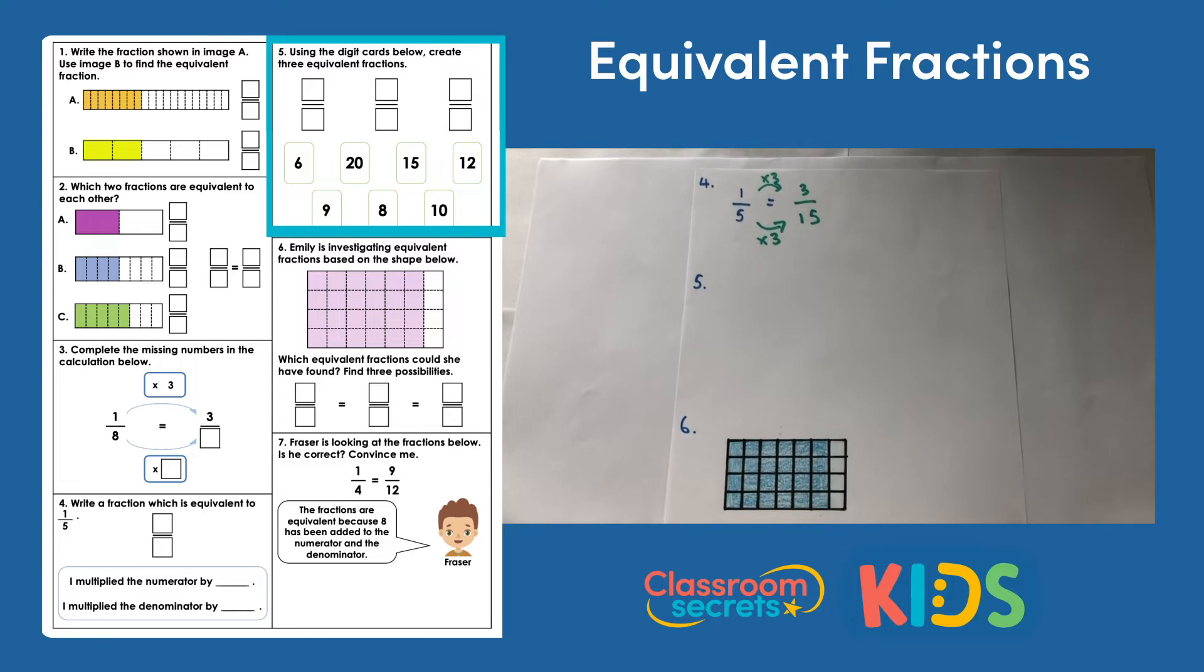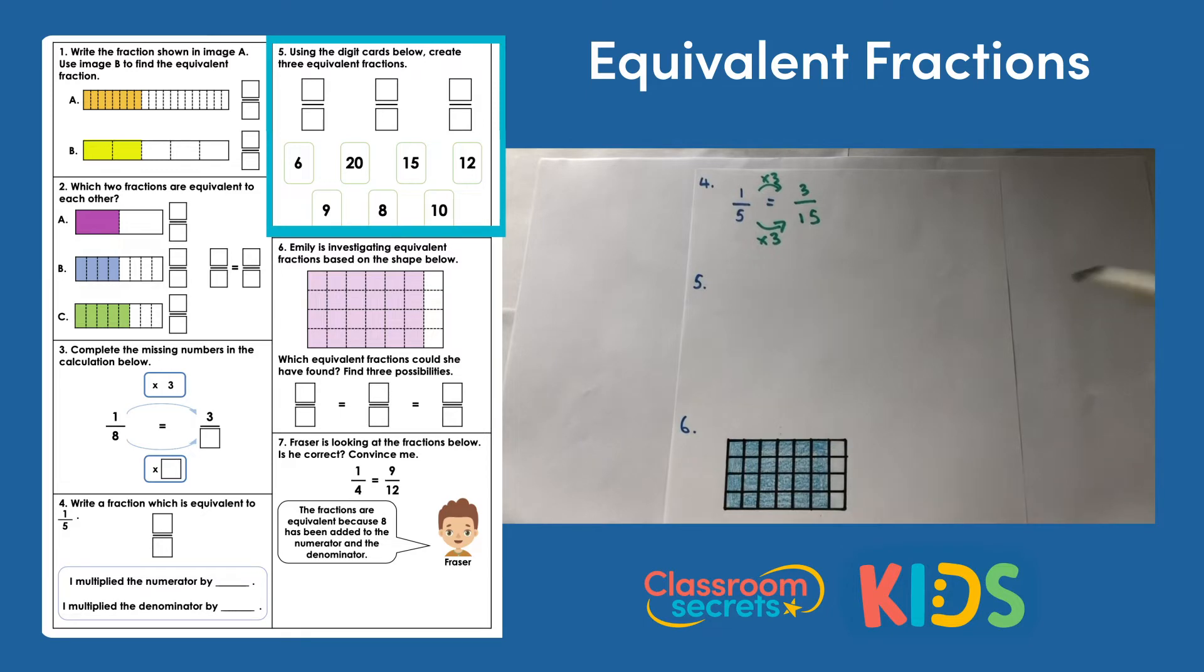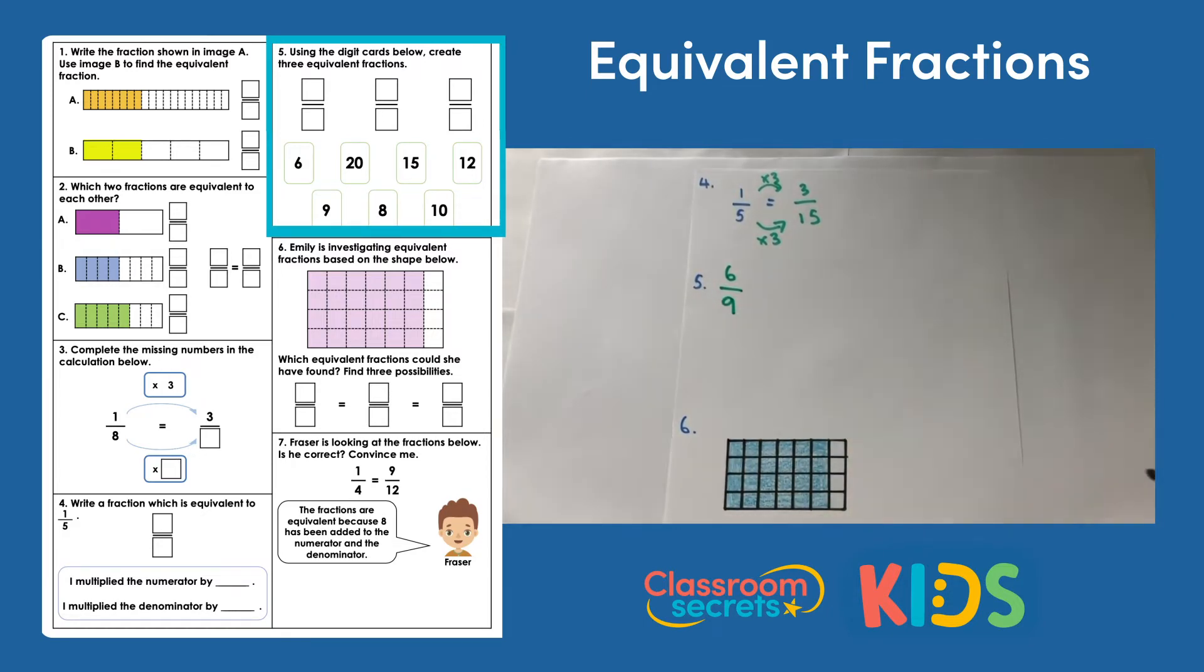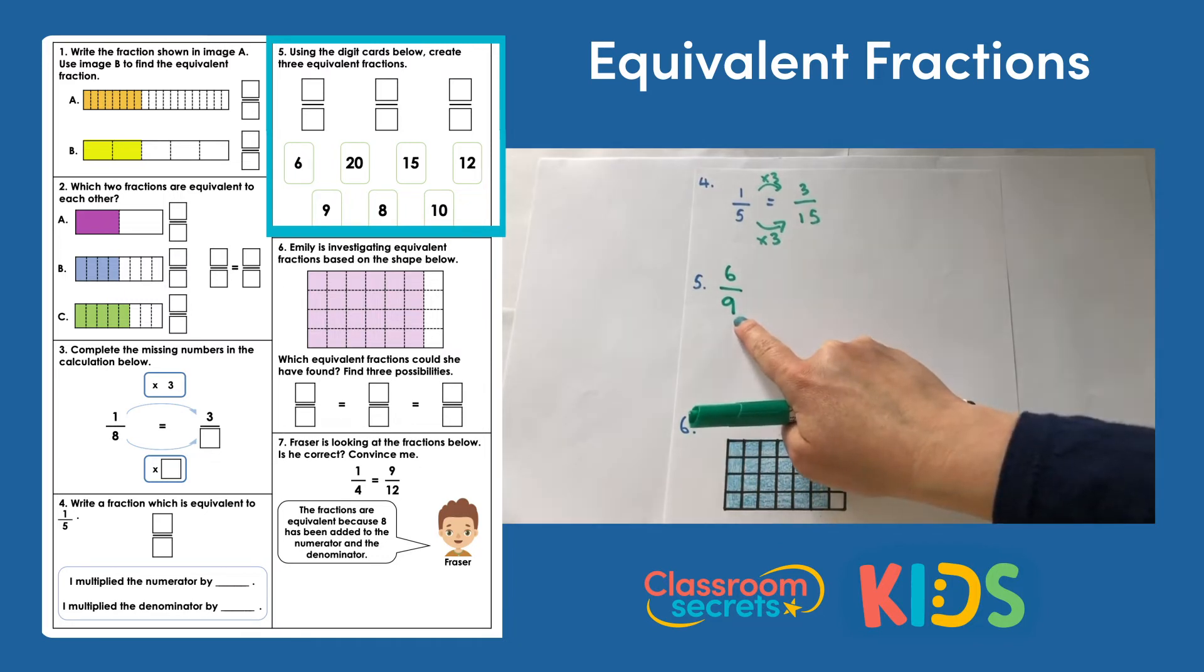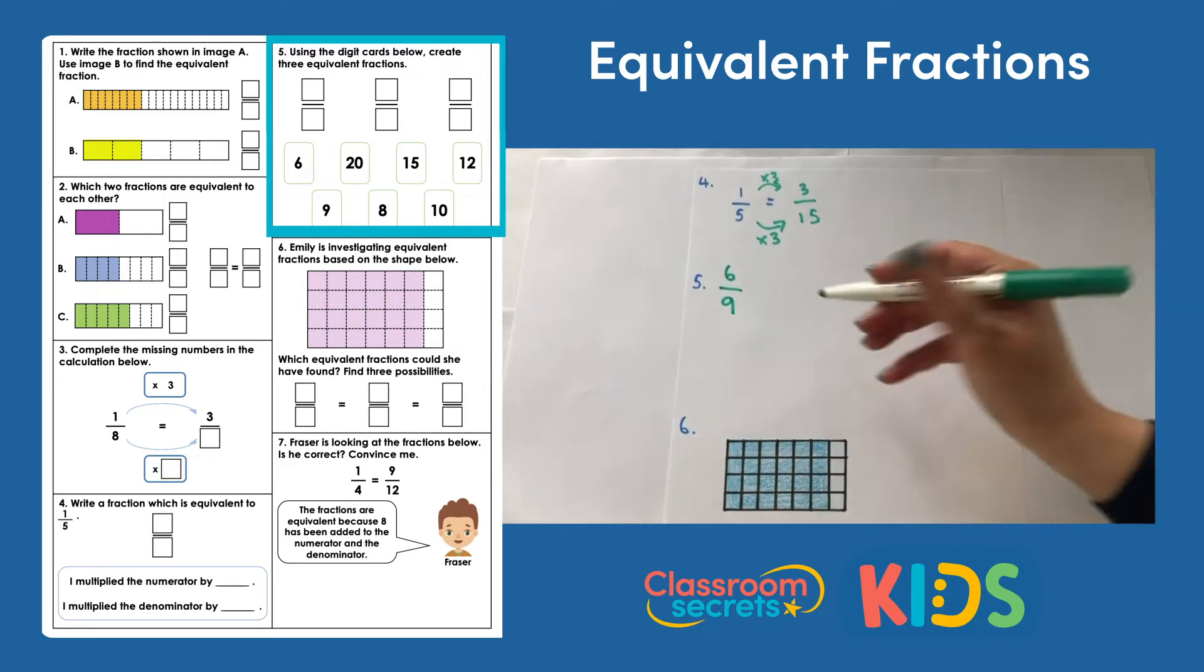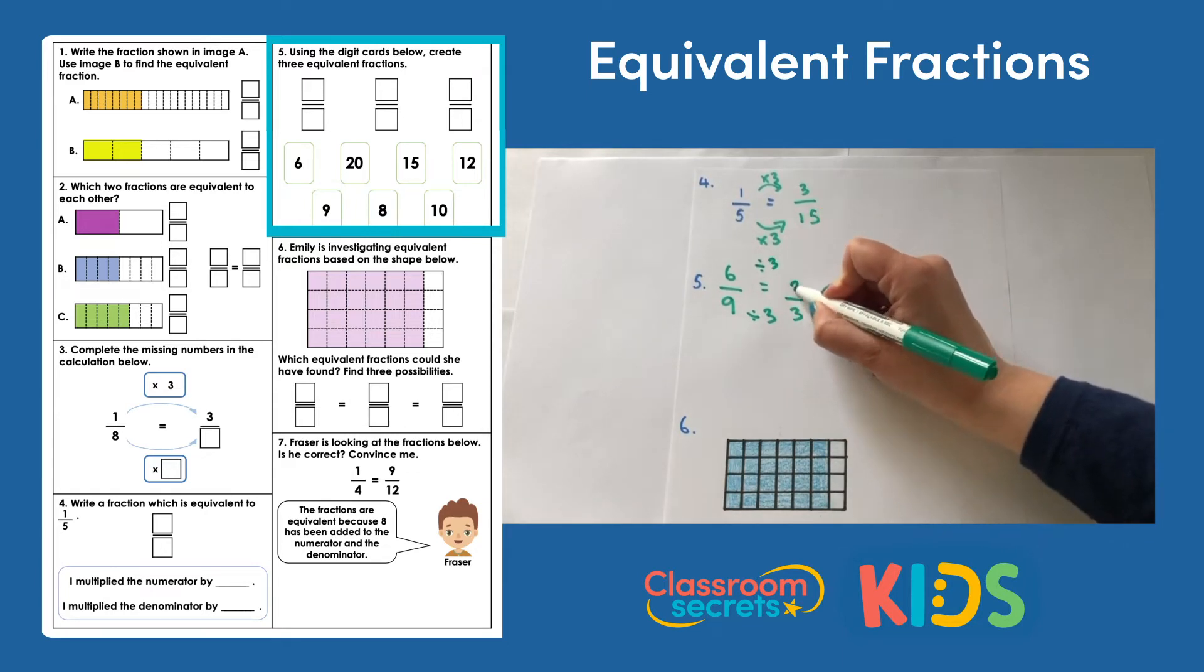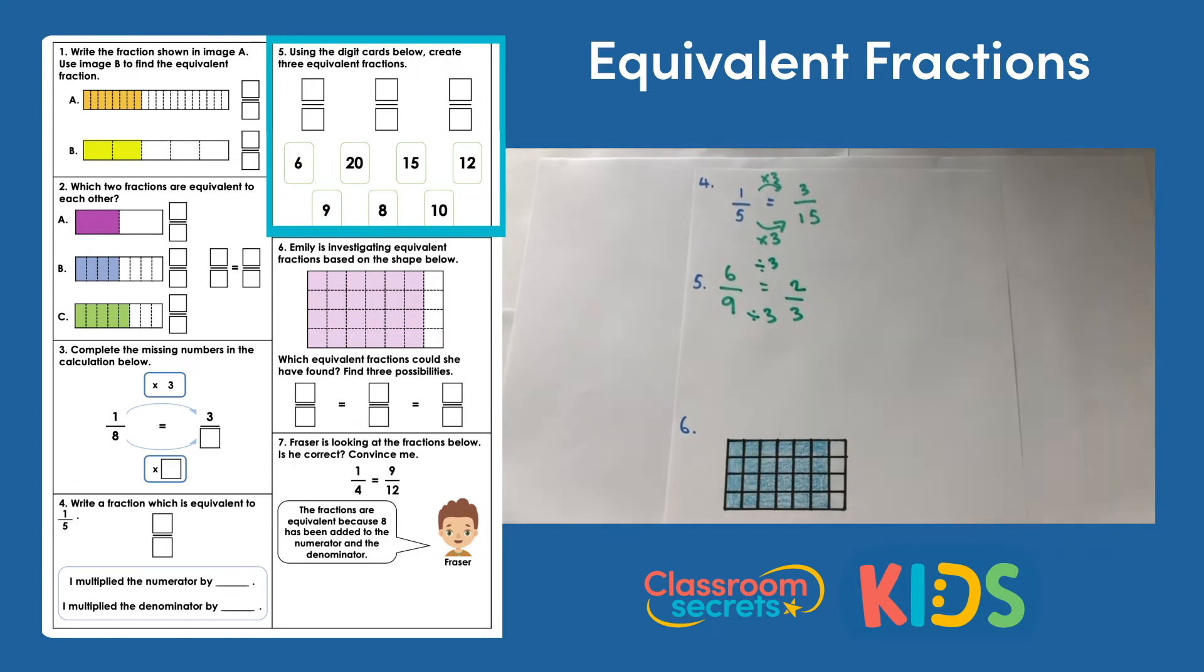I'm going to try, first of all, 6 ninths as my first fraction. Because I know that if I then divide by 3, I'll get 3. In fact, I'm going to write that here. And if I divide this number by 3, I'll get 2. So I'm actually working with the fraction 2 thirds.